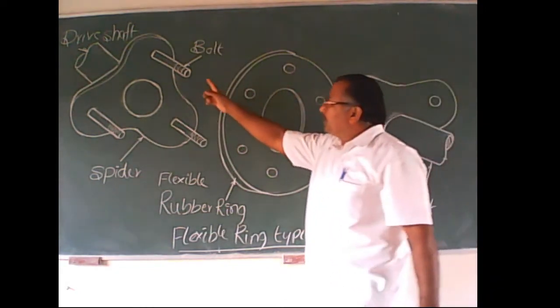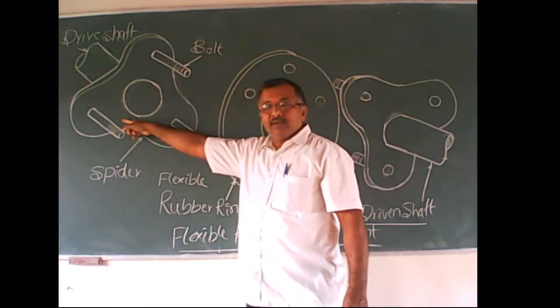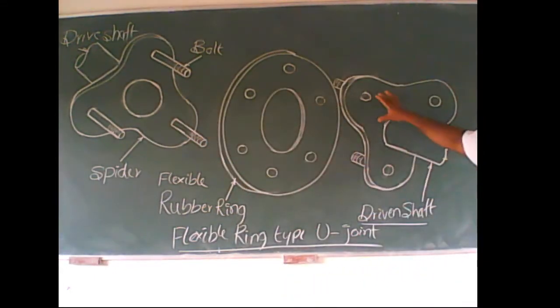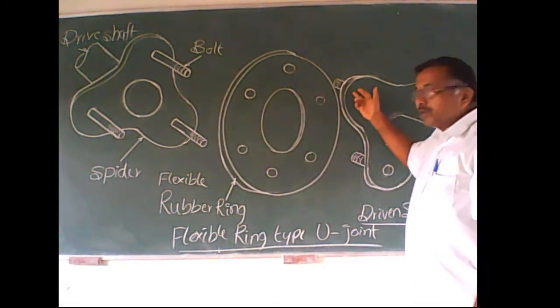Here, three bolts. That is one twenty degree. Each one twenty degree, we are having three bolts. Opposite to that, we again have another spider having three bolts. Three bolts, three arms, where three bolts are placed.